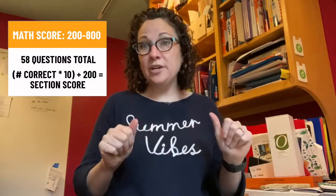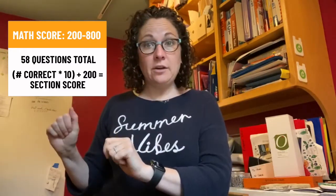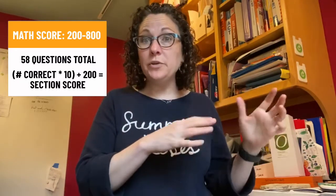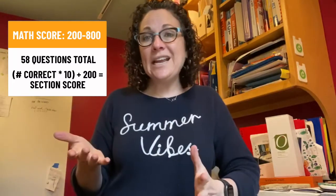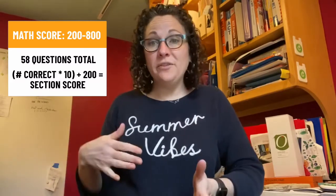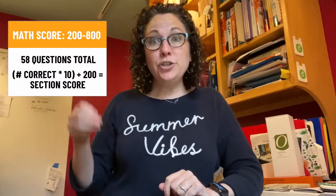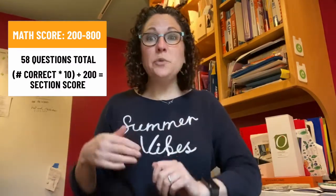The math score is a number between 200 and 800. There are two math sections on the SAT: 20 questions where you cannot use your calculator and 38 questions where you can, for 58 math questions total. Here's a neat trick: take the number of questions you got correct — say, 35 — multiply by 10 to get 350, then add 200, giving you 550. So 35 correct questions equals an approximate math section score of 550.